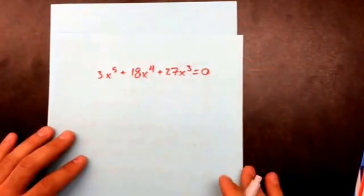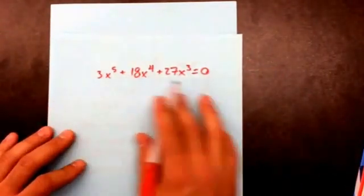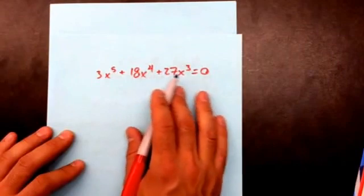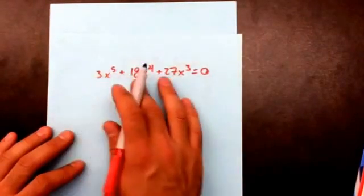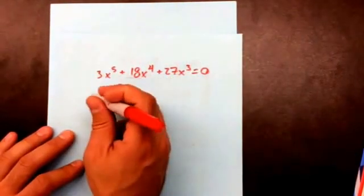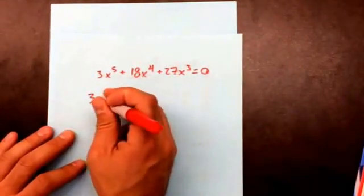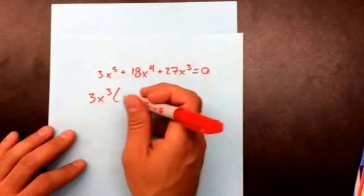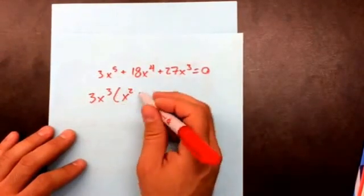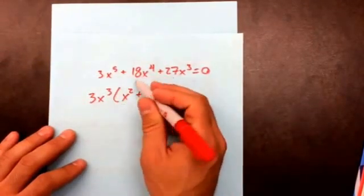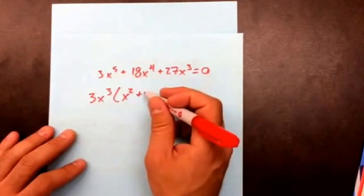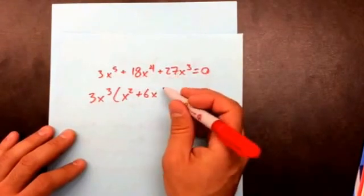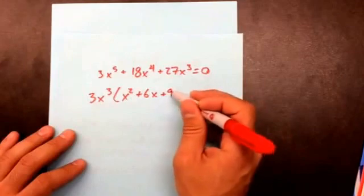This polynomial — they all have x's in them, so obviously I can factor out an x. They're also all divisible by 3, so I'm going to factor out 3x³. When I divide each term by 3x³ I'm left with x², then 6x, then 9.